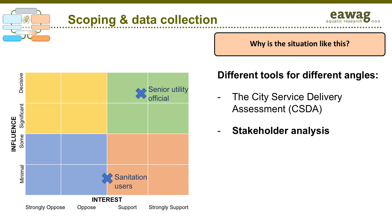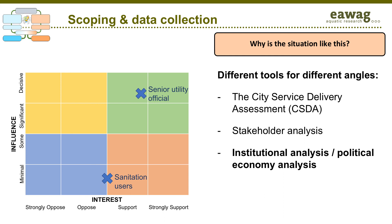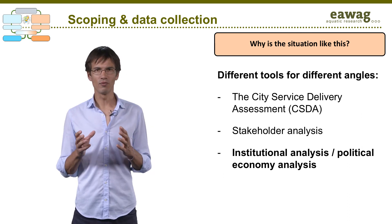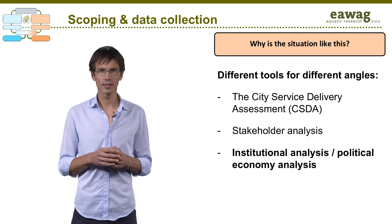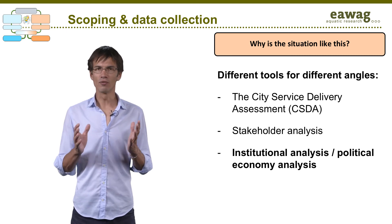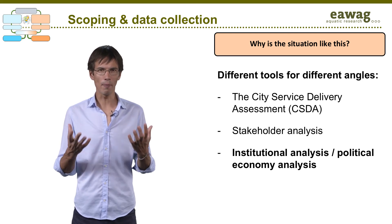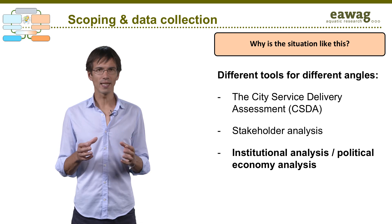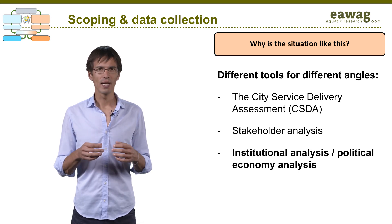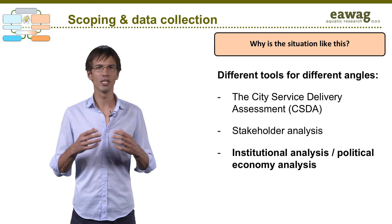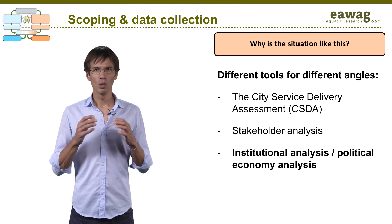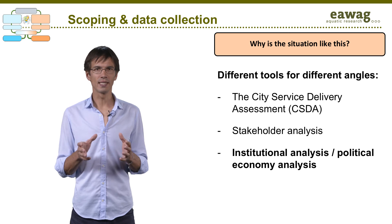If you need to understand the formal and informal rules of the sector, you can search for examples of institutional analysis and political economy analysis, and learn more in the module Working Politically. It will help you assess the influence and interest of stakeholders, their needs and constraints, their informal and formal relationships, and to make a so-called stakeholder mapping. It will also help you understand which incentives and barriers exist for the proper functioning of sanitation in your city. We will tell you more in the module on stakeholder analysis and engagement.